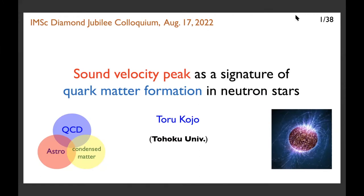Welcome everyone to the IMSC 60 Colloquium Series. Today it's a great pleasure to have Professor Toru Koyo with us. Toru did his PhD from Kyoto University and then was a postdoctoral fellow at Brookhaven National Lab, subsequently at Bielefeld University and then at University of Illinois at Urbana-Champaign. Toru has done very highly cited works on finite density QCD. One of the earlier works was on quark-ionic matter, which is a novel state of finite density QCD matter. After that, he has been interested in understanding QCD matter at finite density by looking at neutron stars, which are cosmic laboratories for studying fundamental physics.